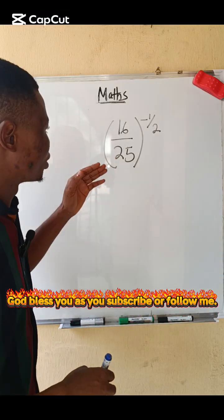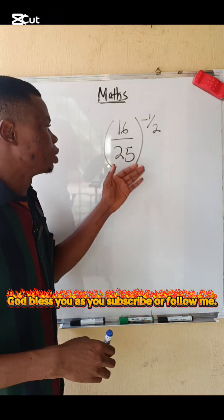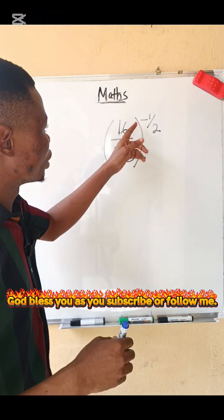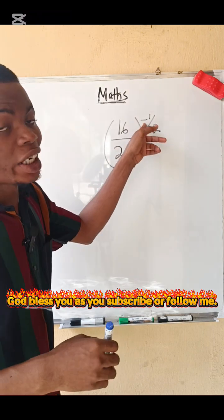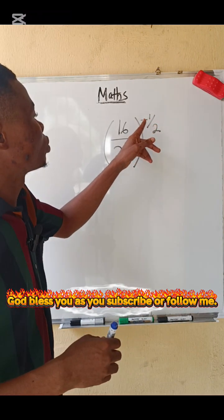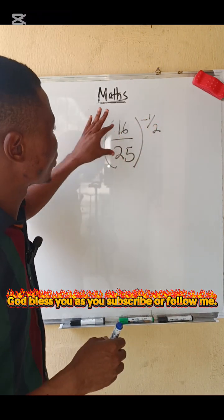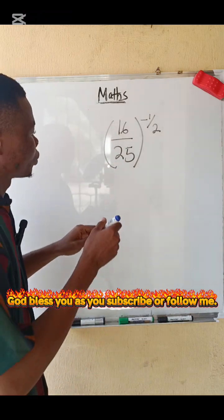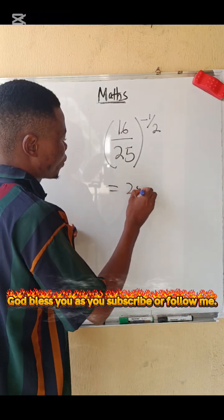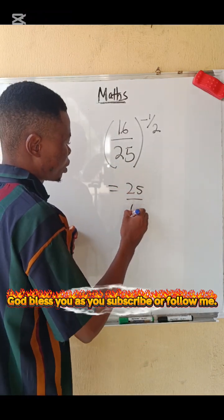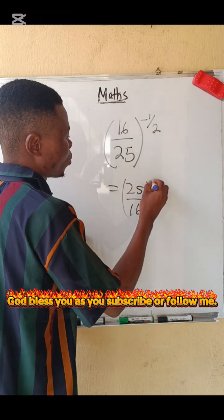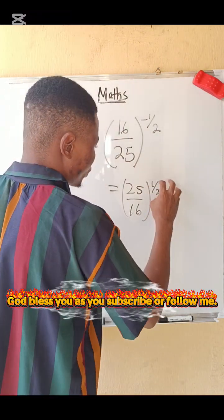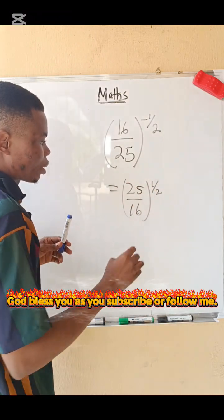Let's simplify this. The first thing you have to do is remove this negative sign. To remove this negative sign, you have to turn what is inside the bracket upside down. This is what we are going to have: 25 over 16. So we have 1 over 2 raised to the power 1 over 2 — here 1 over 2 means square root.